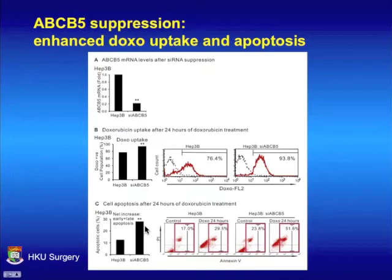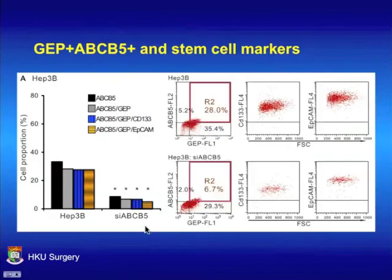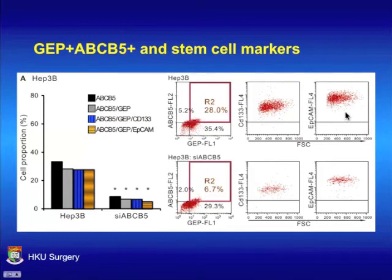The cells were then examined for stem cell marker expression. GEP and ABCB5 co-positive cells were gated and examined for CD133 and APKAM expression, which have been shown to be hepatic cancer stem cell markers. ABCB5 suppression decreased the expression of these stem cell markers.